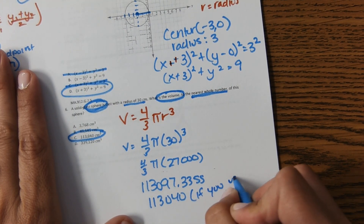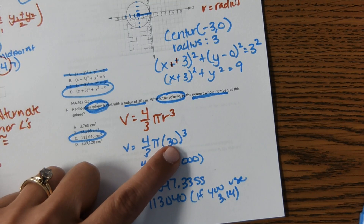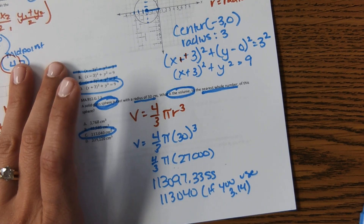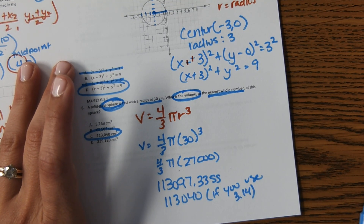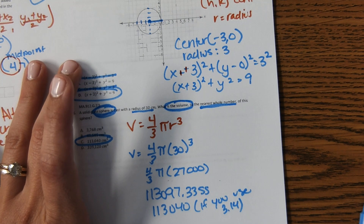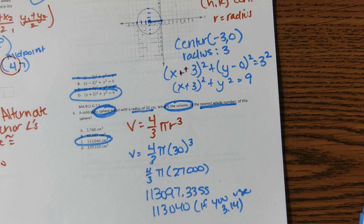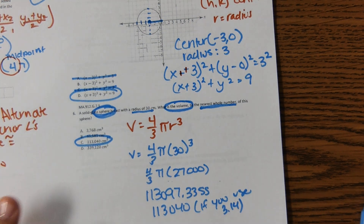If you're unsure how to enter four-thirds or cube a number, use the EOC calculator. You can enter the formula exactly as written — (4/3) × π × 30³ — and it gives you the answer without worrying about order of operations. Definitely use it to eliminate mistakes and errors.